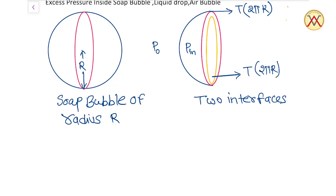Since the soap bubble is in a stable state, there is a force towards right due to surface tension. One interface is between air outside and the soap bubble, and one interface is due to air inside and the soap bubble. The force due to outside air is surface tension T multiplied by the length of the circumference, and force at the inside surface is surface tension T and the length of the circumference. For equilibrium state, we can say Pn minus P0 into pi r square.